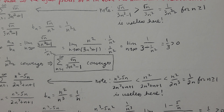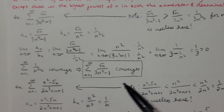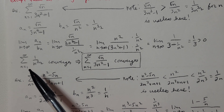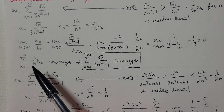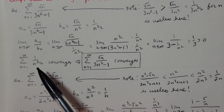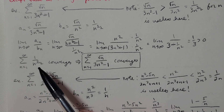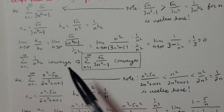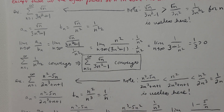1/3 is a number greater than 0, which is all we need for the limit comparison test to work. The series Σ 1/n^(3/2) from n=1 to infinity is a convergent p-series with p = 3/2. Because that series converges, the original series also converges by the limit comparison test.